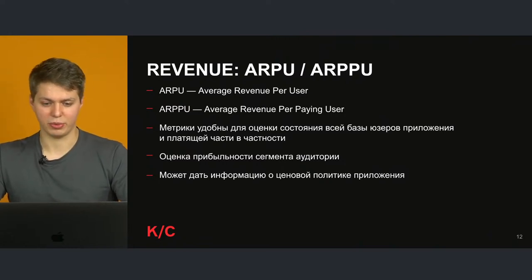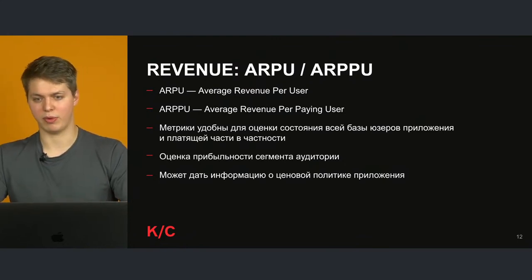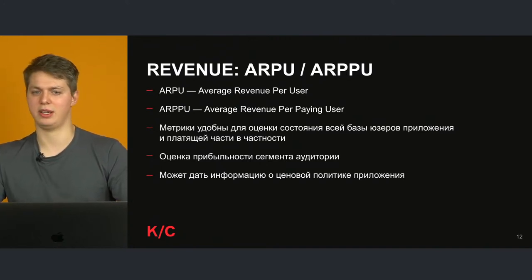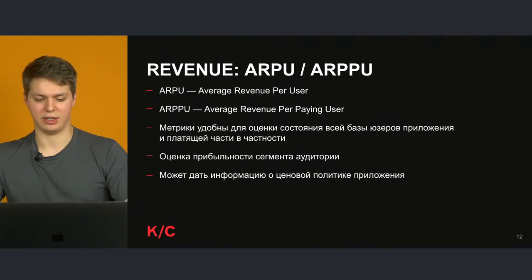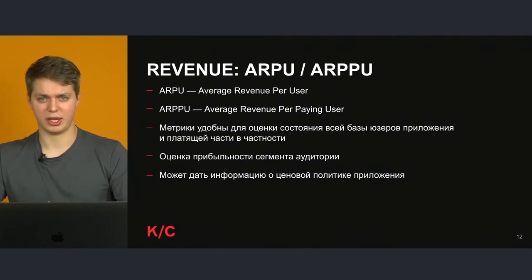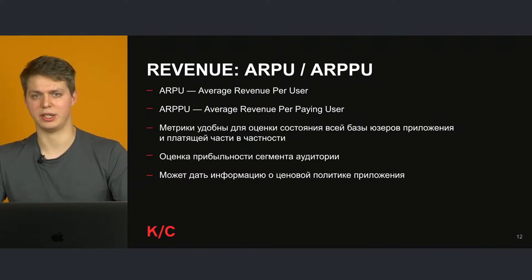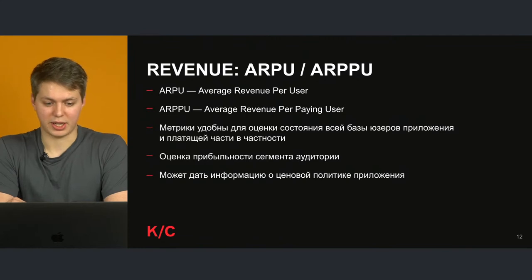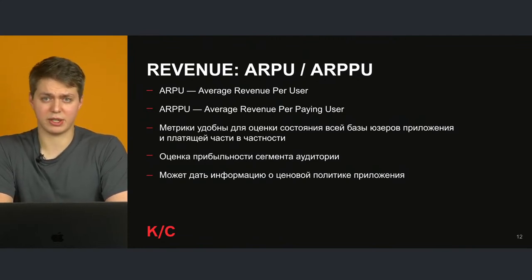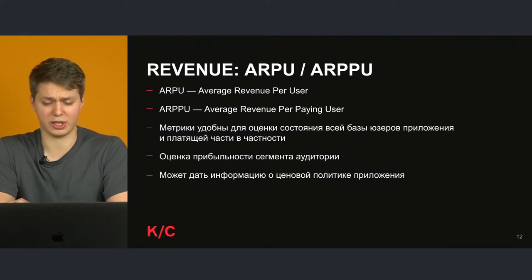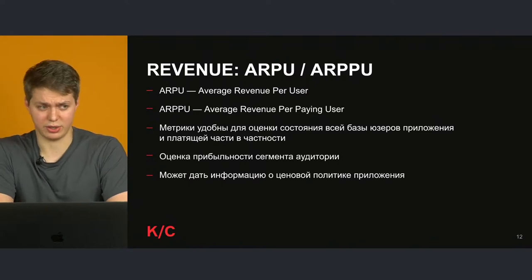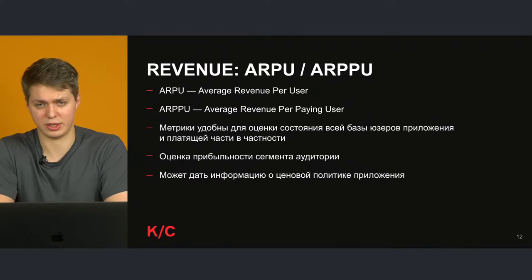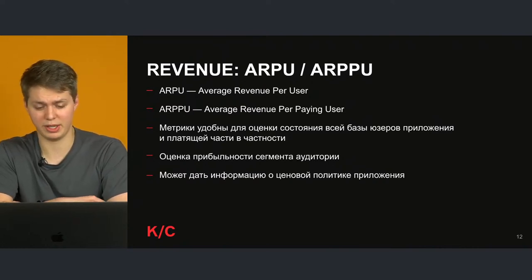ARPU и RPPU можно делить по сегментам аудитории: по половому признаку, по возрастному. Если игра для детей и подростков — можно играть ценами для них; если более взрослые люди — выстраивать ценовую политику исходя из особенностей, которые расскажет маркетинг или product-менеджеры. Изменение этих метрик даст полезную информацию о вашей ценовой политике — возможно, цены занижены или завышены.